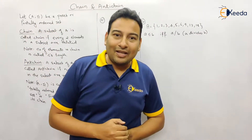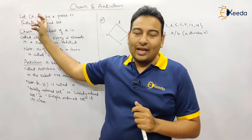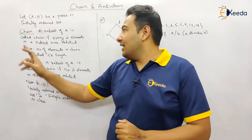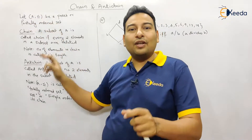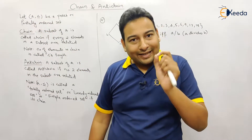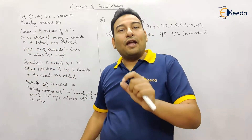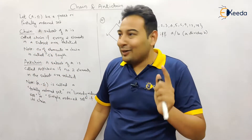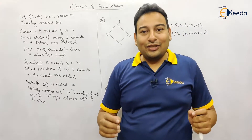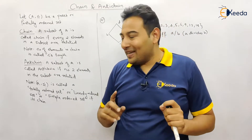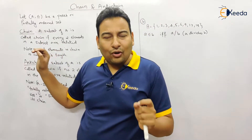Now, what do you mean by chain? First of all, it has to be a subset of this poset in which every two elements are related — then it is called a chain. If every two elements are not related, then it is called an antichain. So this is the definition of chain and antichain.